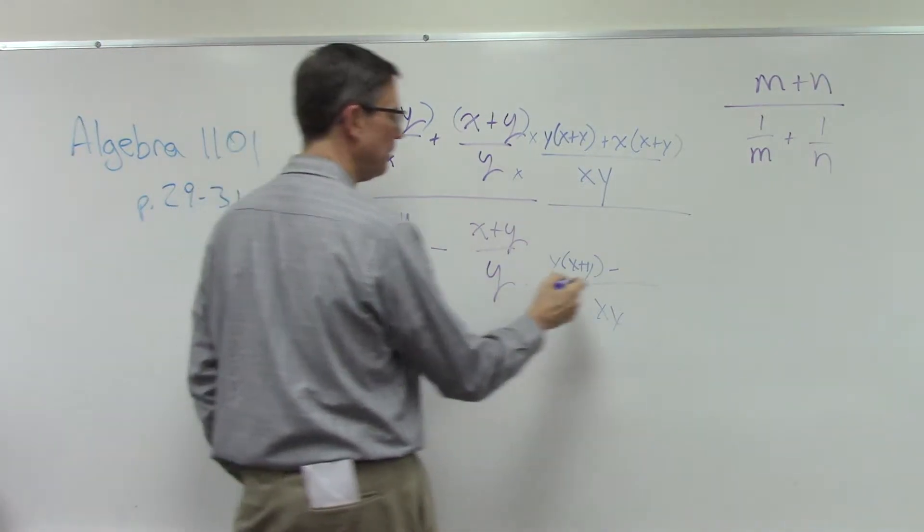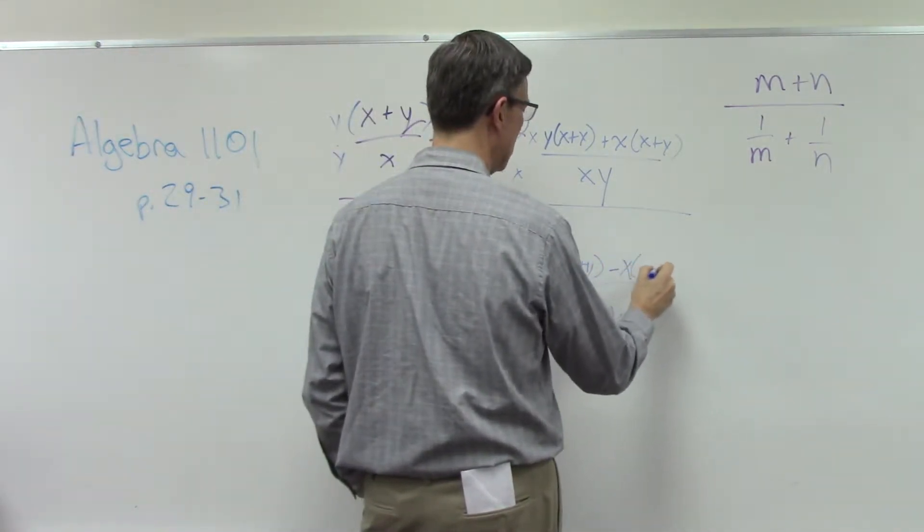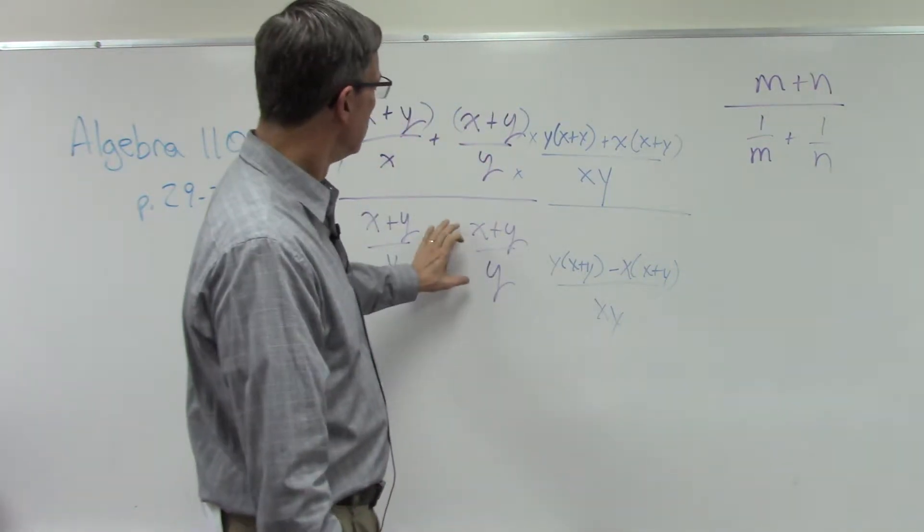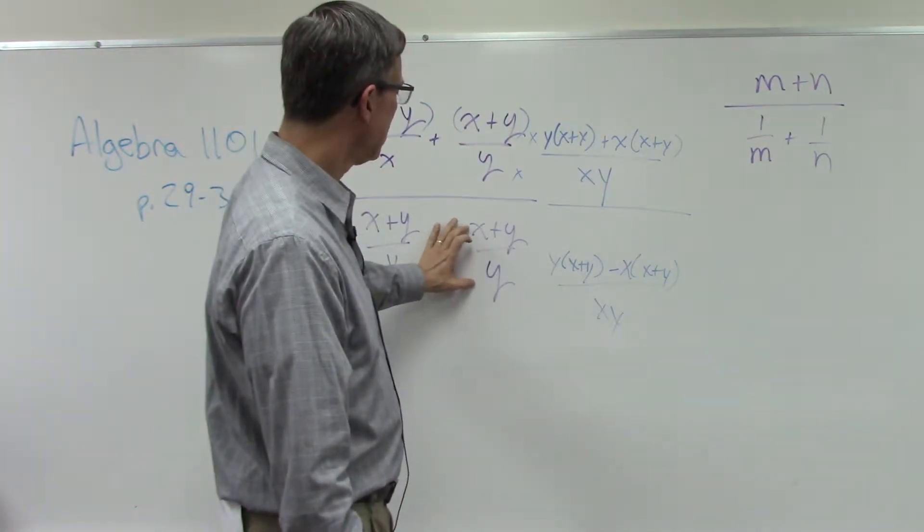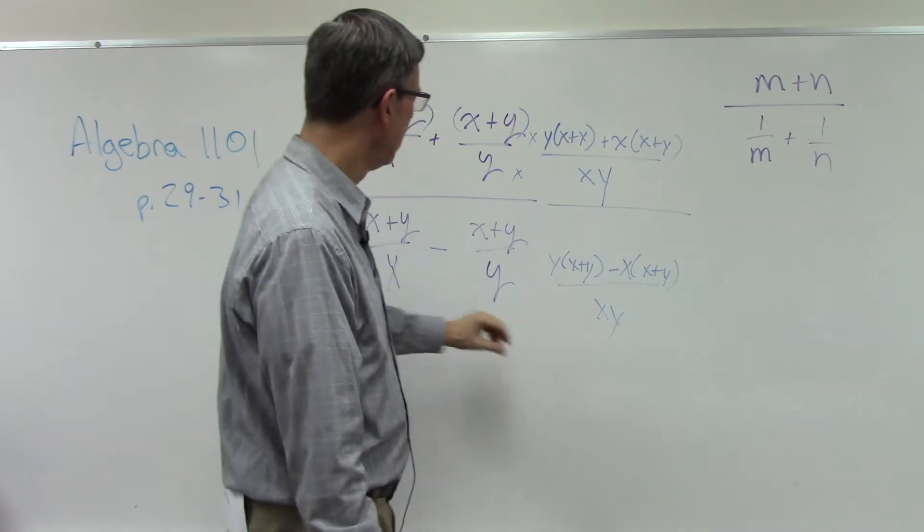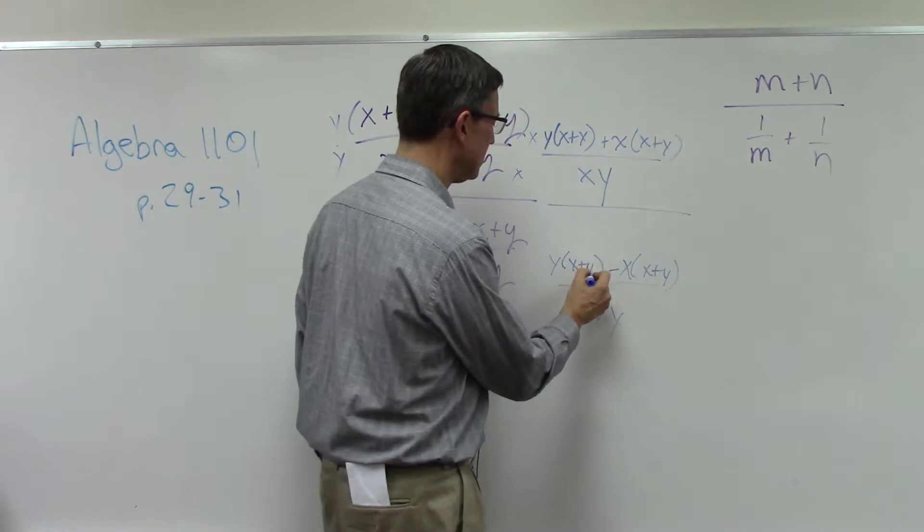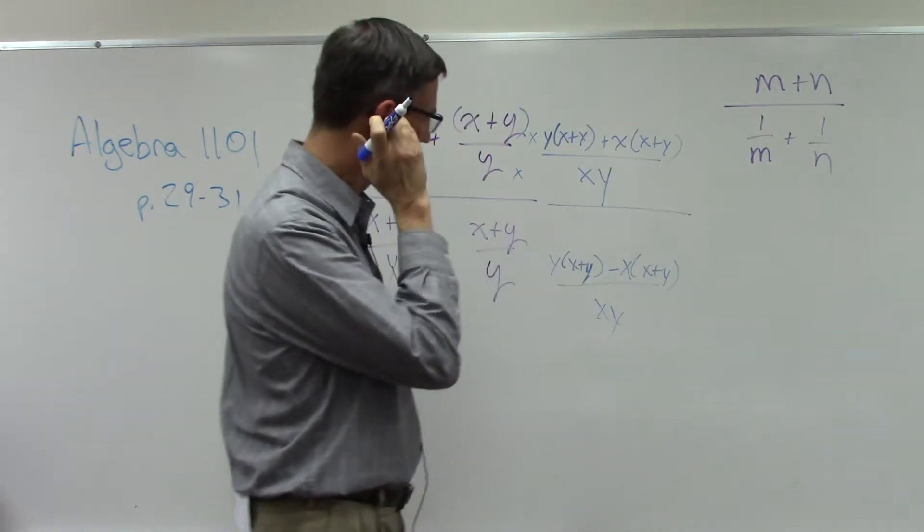this one's missing x top and bottom, so x times x plus y. So I multiply top and bottom by x here to get the common denominator. This one, top and bottom by y, it's kind of sloppy, but that's x plus y.